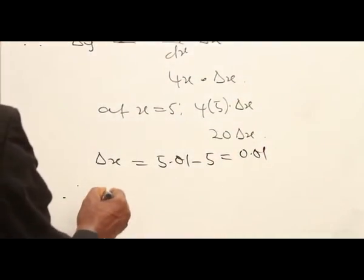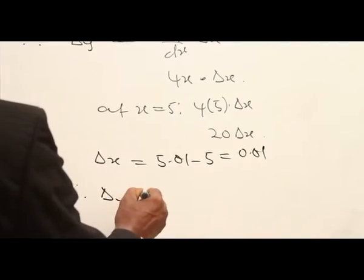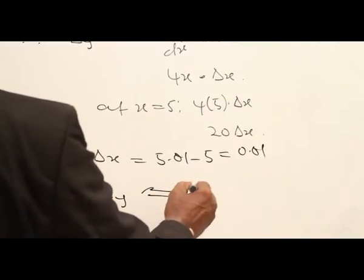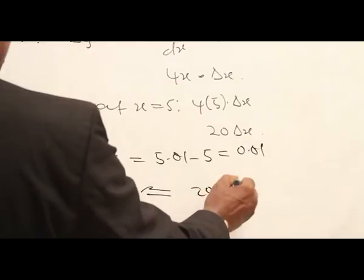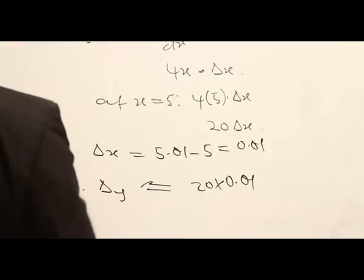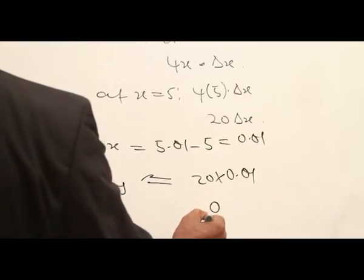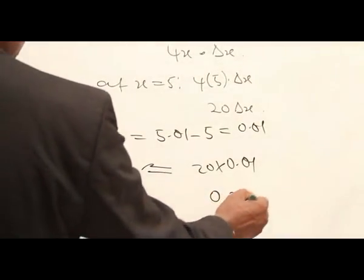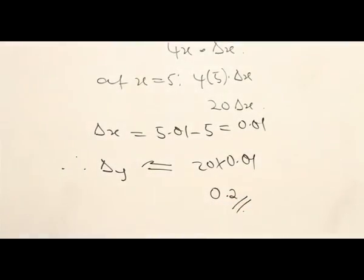Therefore, the increase is approximately equal to 20 times 0.01. And when you multiply this, you will have 0.2.